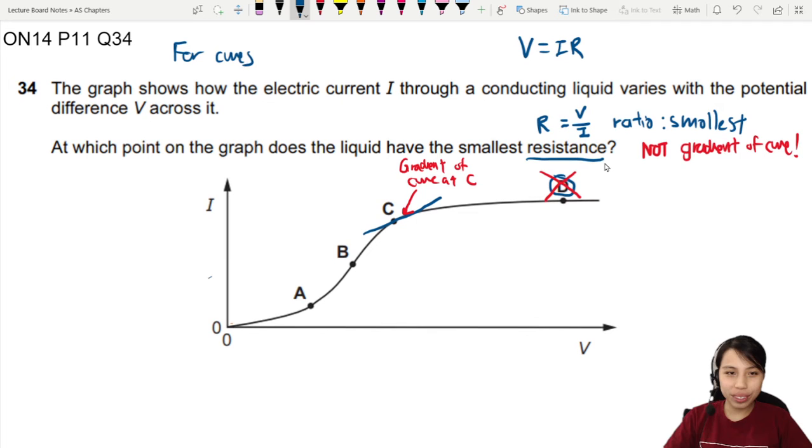For curves, ratio V over I is not the same as dV/dI, or not the same as delta V over delta I. So you cannot, we cannot treat them like gradients or tangents anymore. Okay, so let's see, how do we find it then if we cannot find tangent.